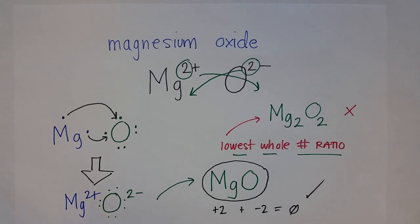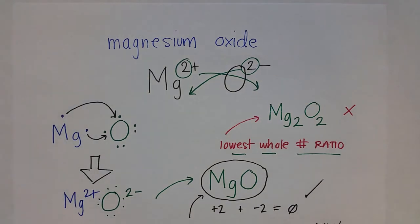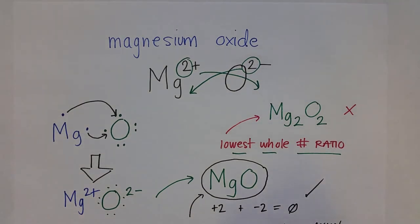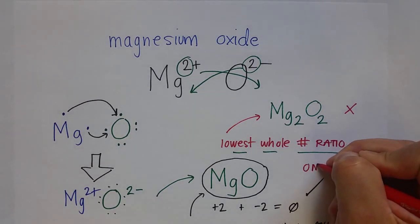Now, this whole time I have been writing the cation first and then the anion, and that is the correct way to write formulas. The cation always goes first, write cation first, then anion, or metal then non-metal is another way to remember it. So, magnesium oxide is always MgO. It is never OMG.